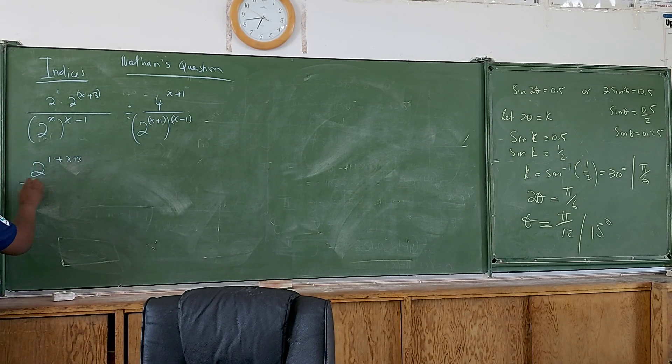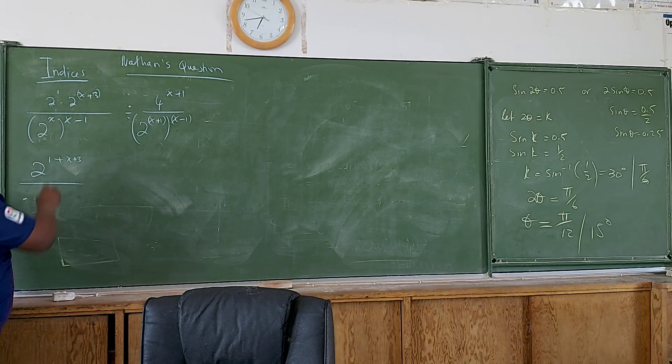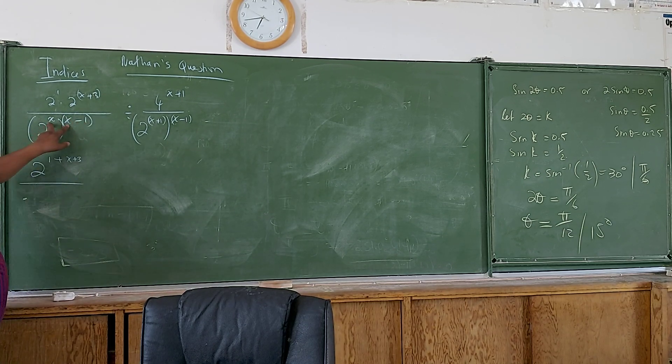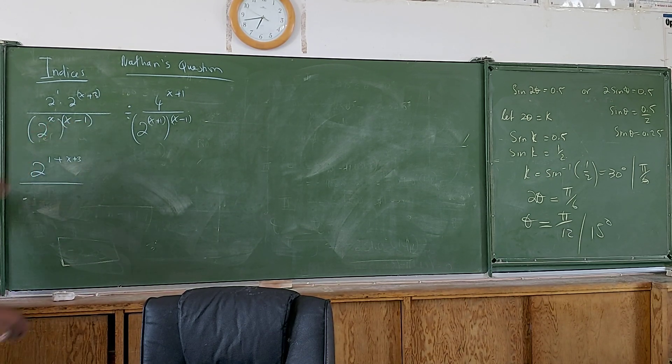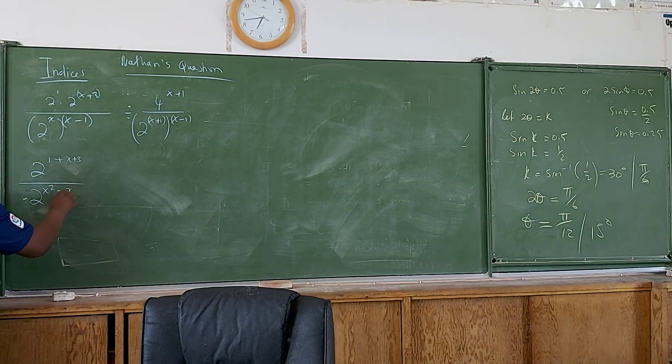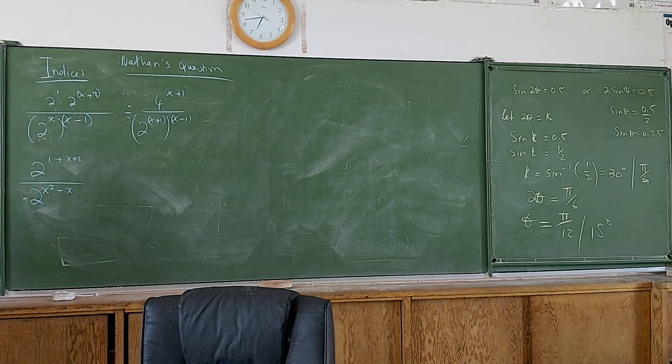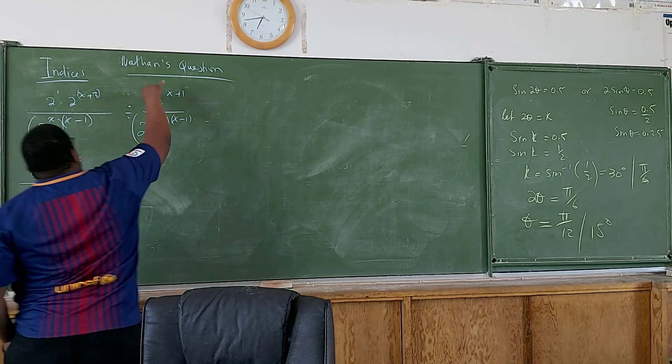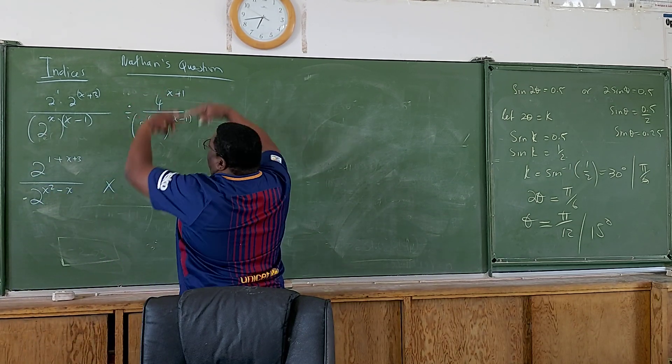When you get to this part, you multiply the bases. So this is going to give me 2 raised to the power of x squared minus x. I'm going to change this division to a multiplication and everything that is under comes to the top.